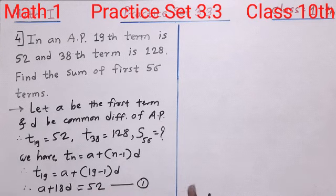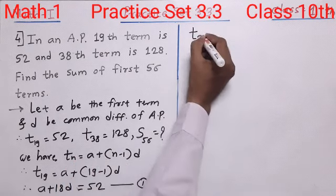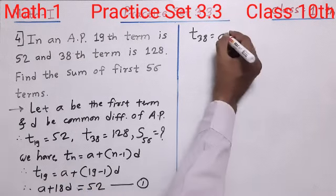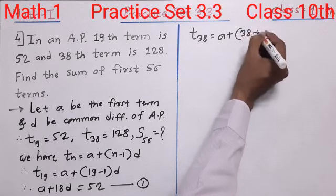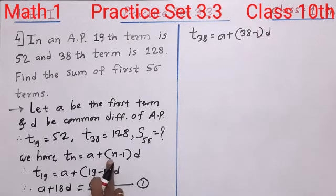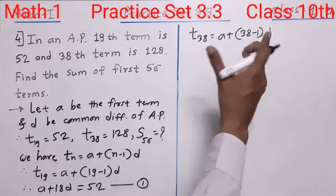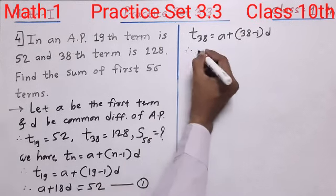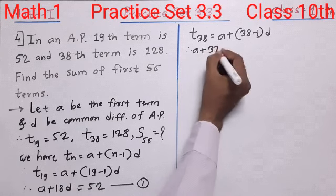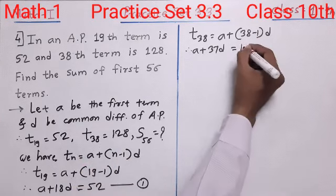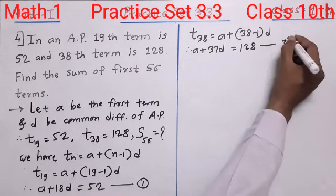In the same way, we write the second equation for T38 using the same formula for TN. T38 = A plus (38 minus 1) into D. Interchanging sides, A plus 37D is equal to 128, which is the value of T38. In this way we get the second equation.